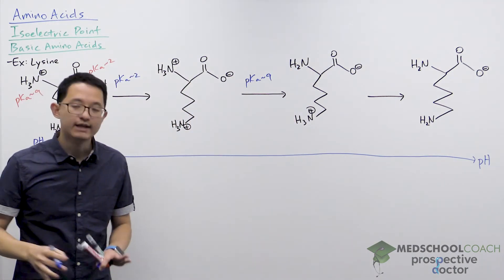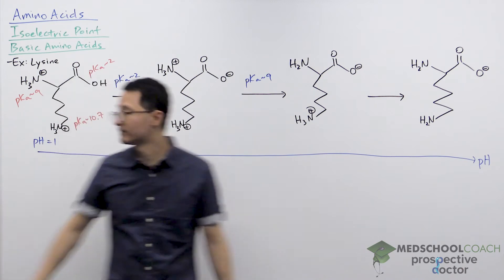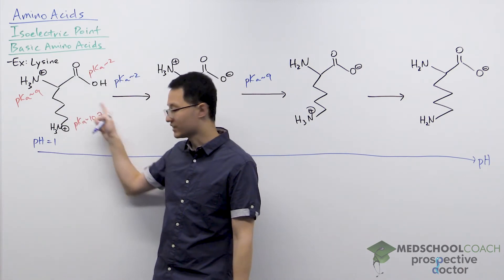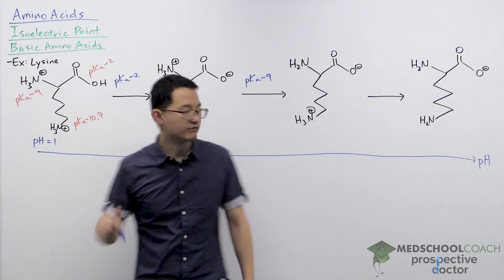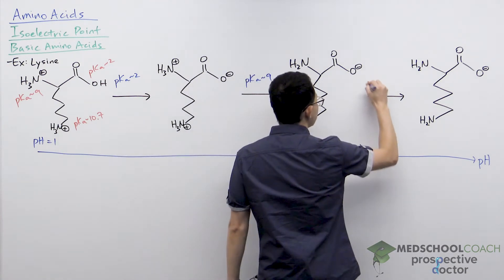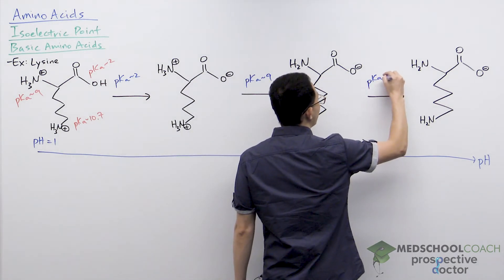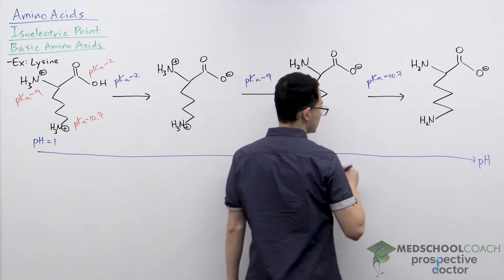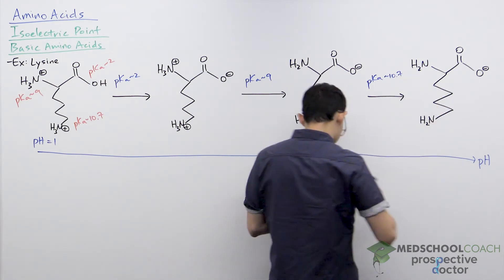Finally, as you increase your pH even further, at some point when your pH exceeds this pKa value of 10.7, then the sidechain will also become deprotonated. So now all three groups are deprotonated.